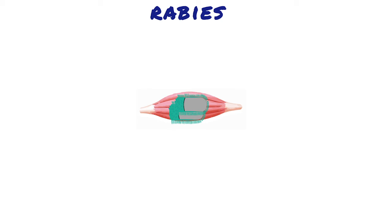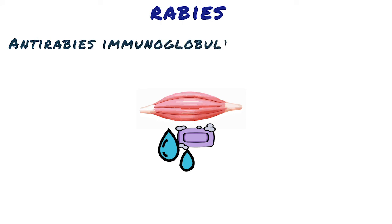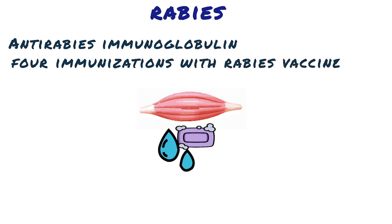The first protective measure is local treatment of the wound. The wound should be washed immediately with soap and water or another substance that inactivates the virus. Anti-rabies immunoglobulin is injected near the wound. Subsequently, four immunizations with rabies vaccine are administered within two weeks, with one initial dose of human rabies immunoglobulin. Passive immunization with human rabies immunoglobulin provides antibody until the patient produces antibody in response to the vaccine. The slow course of rabies disease allows active immunity to be generated in time to afford protection.